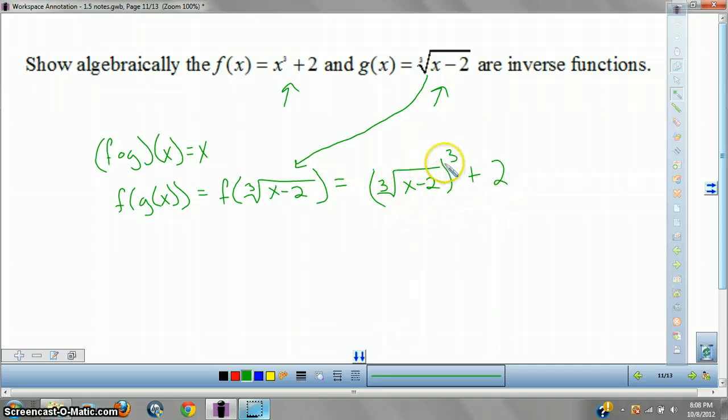So wherever I see an X in my f of X, I'm going to plug in this piece. So I'm going to plug in cube root of X minus 2 cubed plus 2. Well, what's this piece cubed? Good question. These are going to cancel. You're left with X minus 2 plus 2. So you're left with X, which is what you're looking for. What it's saying is any X you plug in, you get back to X. You have to do this both directions, though.